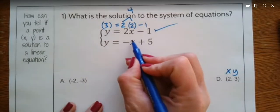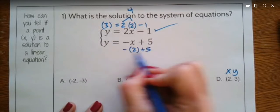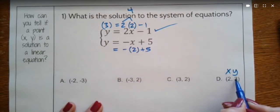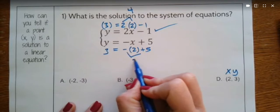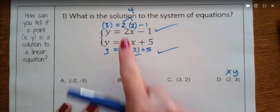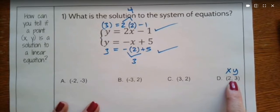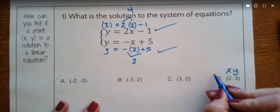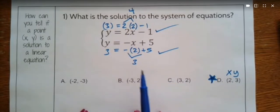Wherever I see x I'll plug in 2, and for y I'll plug in 3. Negative 2 plus 5 equals 3 — yes, it checks out. That means both lines travel through that point on a coordinate plane, meaning they intersect there, and (2, 3) is the solution to the system. It has to be true for both lines.